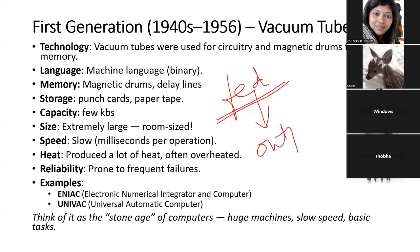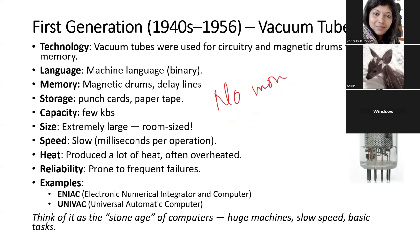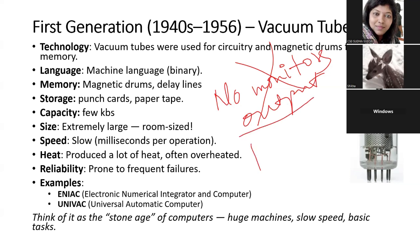Since there was no monitor, the output was given as a printout on paper from a printer. The processing capability of the computer could only handle a few kilobytes of data. The size of these computers was massive — literally room-sized — compared to today's compact laptops and desktops. The speed was also very slow compared to today.